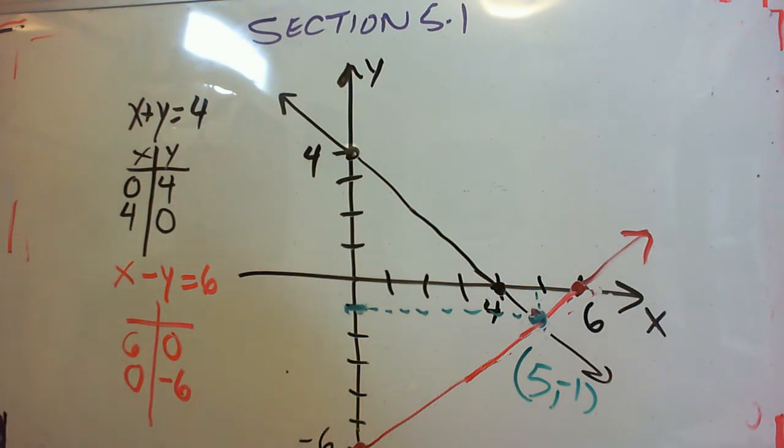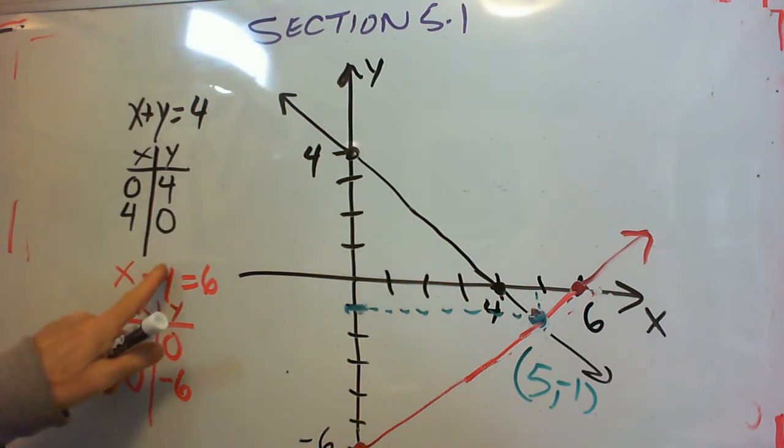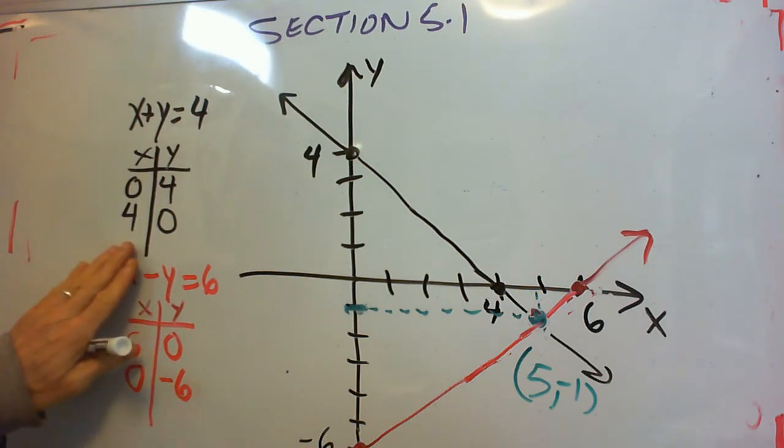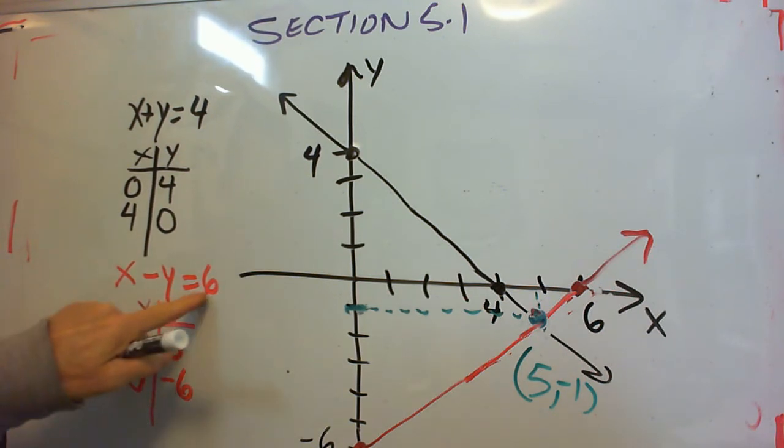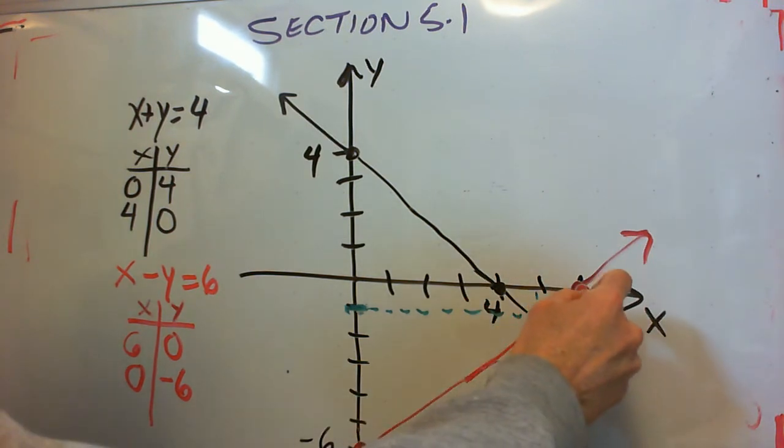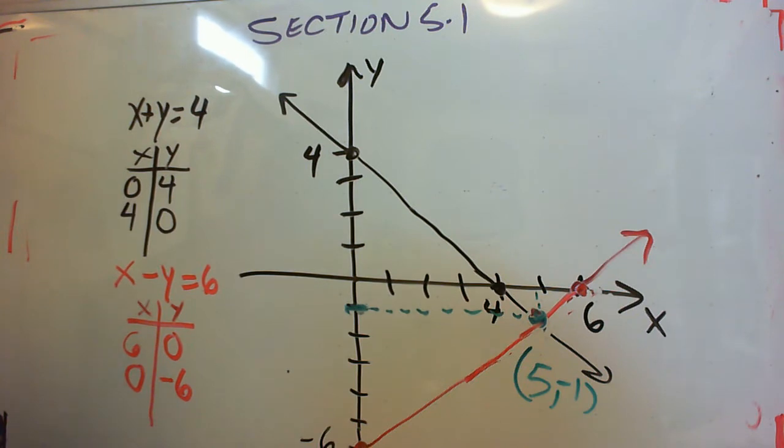Our second line, x minus y equals 6. When x is 6, y is 0. That's one intercept. When x is 0, we have negative y equals 6. That means y has to equal negative 6. The negative of negative 6 is 6. So plotting those two points, 6, 0, the intercept over here, and 0, negative 6, way at the bottom. You can just barely see it on the bottom of the screen. Then putting a straight edge through,